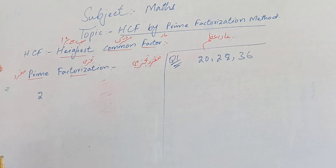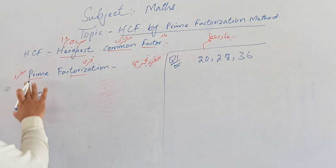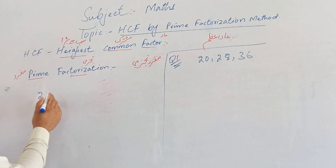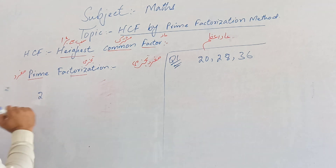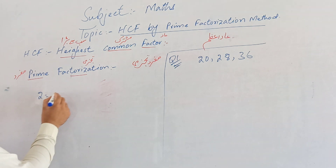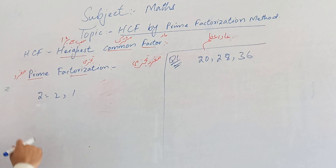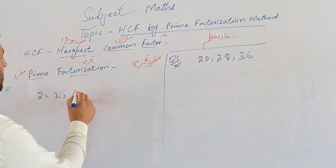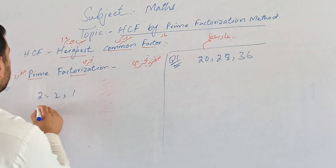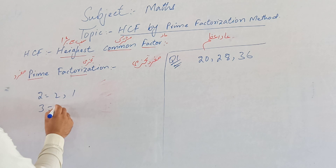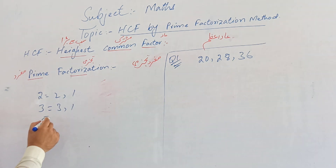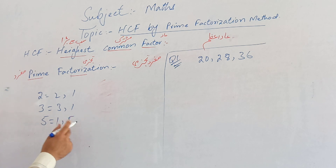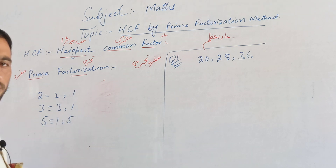Numbers are either prime or composite. We will discuss prime numbers. You can only divide a prime number by one or itself. For example, two is only divisible by one and two. Three is only divisible by one and three. Five is only divisible by one and five.